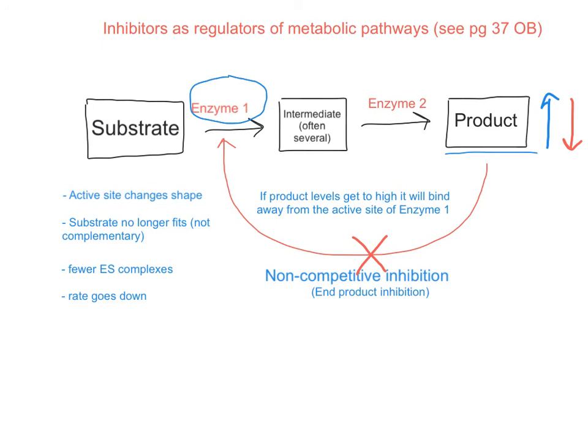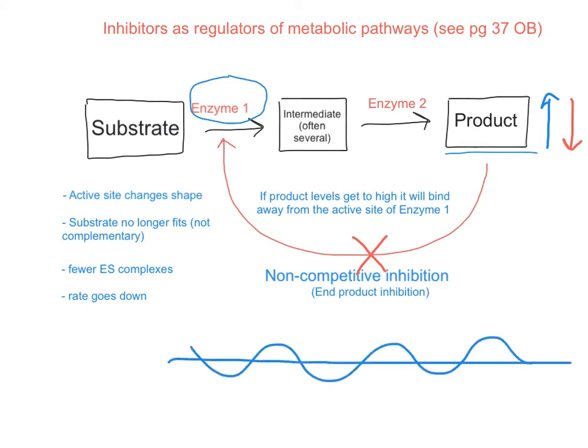As you can see, over time, you get this oscillating effect — every time it goes above where it should be, it will inhibit the enzyme until eventually it drops below, then the inhibition will stop and it will get back to normal but go above again, and so on. Desirable levels would be the straight line in the middle.